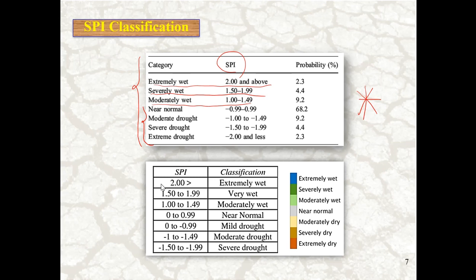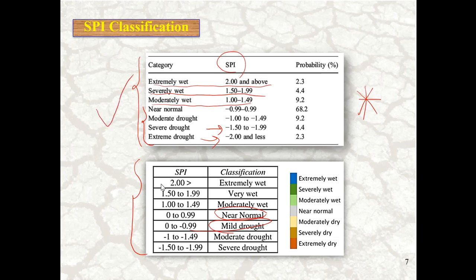Moderate drought is minus 1 to minus 1.49, and severe drought, as you can see here, and also extreme drought, which is less than minus 2. You may see other tables like this in different literature that separate 0 to 0.99 as near normal and 0 to minus 0.99 as mild drought. But the first table is the most important and famous table for dividing different categories of SPI for drought situations.